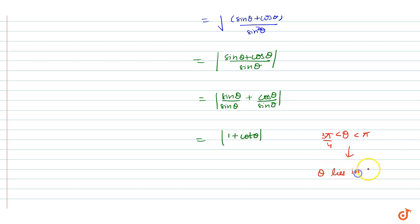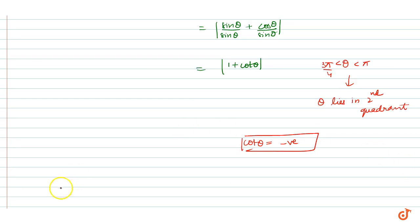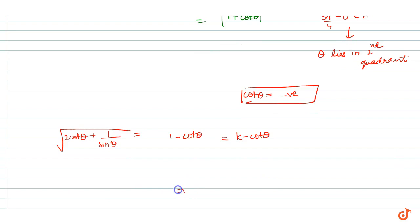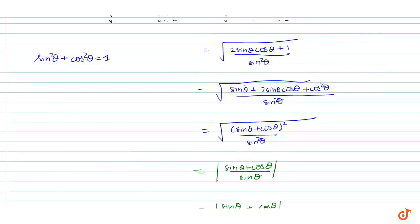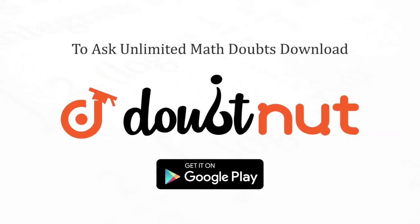Since cotθ is negative in the interval 3π/4 < θ < π, |1 + cotθ| = −(1 + cotθ) = −1 − cotθ. Comparing with k − cotθ, we get k = −1. So our answer is k = 1.